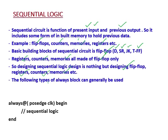The following types of always block can generally be used. This is the normal always block that we use when we design a sequential logic: always at the posedge of clock, begin, then inside begin and end we write our sequential logic statements.